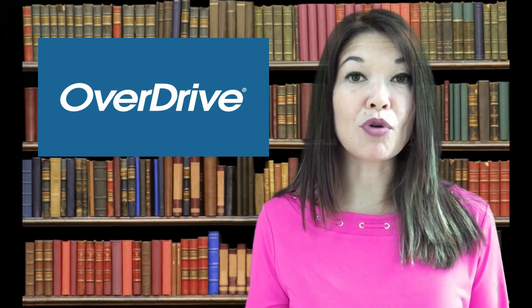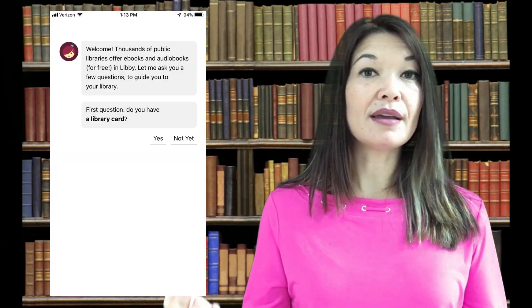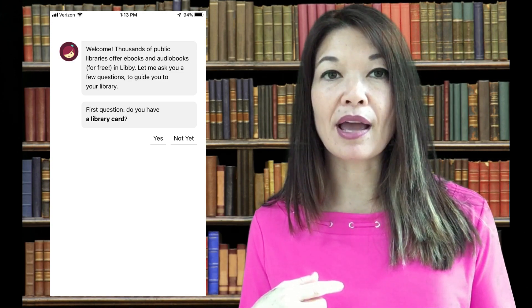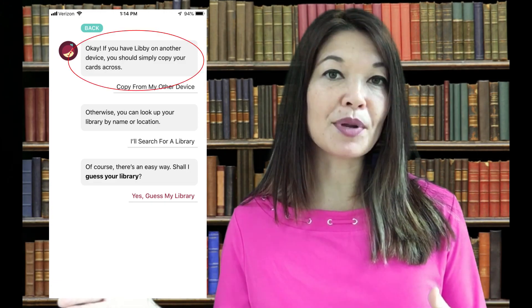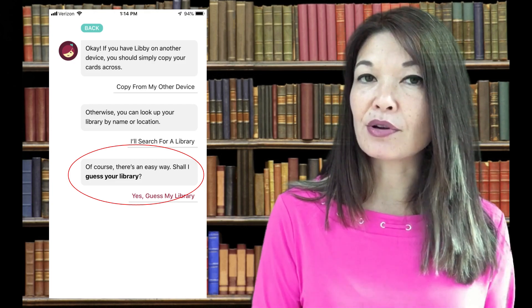My public library has a partnership with OverDrive, which is a distributor for electronic resources like ebooks and audiobooks. Their Libby app allows library patrons to check out these resources using their library credentials. I'm going to show you the iPhone version of Libby, but they also make versions for Android and iPad. Once you download Libby, you'll need to sign in using your library card — you can copy your information from another device, search for your library, or have Libby guess your library based on your location.